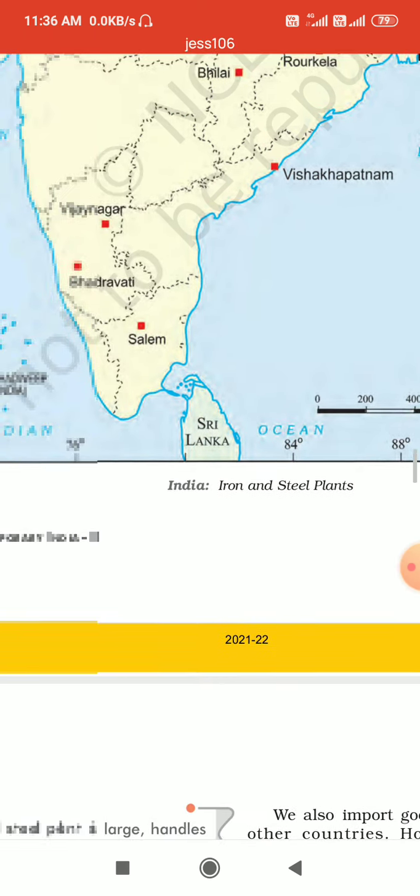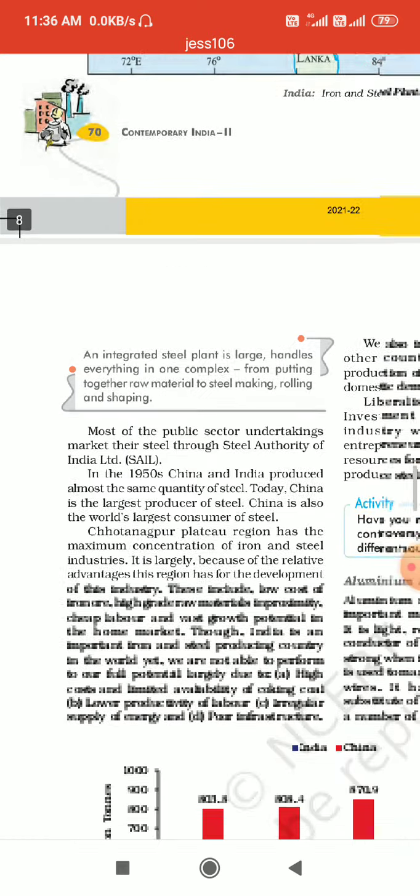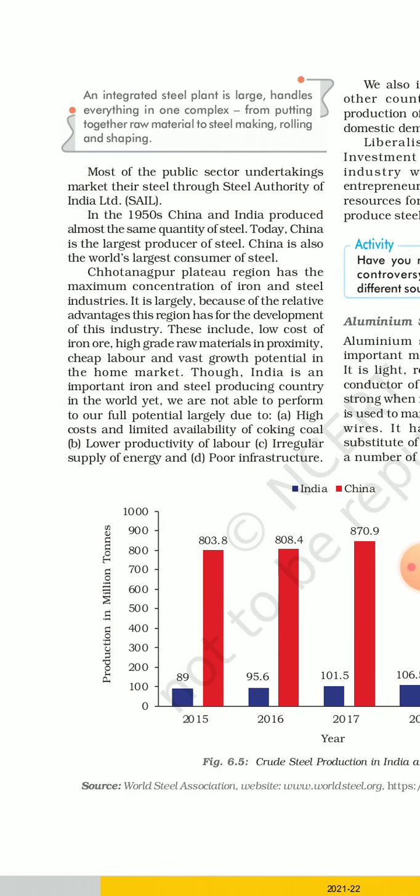Some reasons are there for the location of iron and steel industries in Chhota Nagpur because of the relative advantages of the location. These include low cost of iron ore, high grade raw material in proximity, cheap labor, and vast growth potential in the home market.